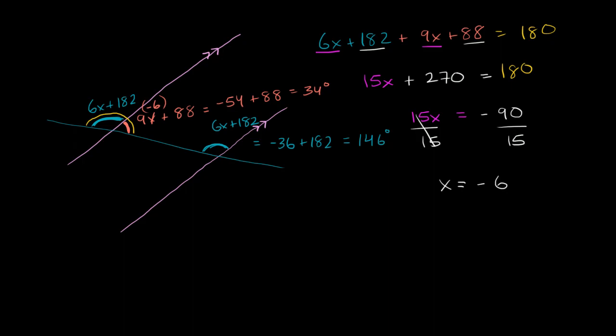And we can also figure out the other angles from this as well. Well, we know that if this is 34 degrees, then this must be 34 degrees as well. Those are opposite angles. This angle also corresponds to this angle, so it must also be 34 degrees, which is opposite to this angle, which is going to be 34 degrees.